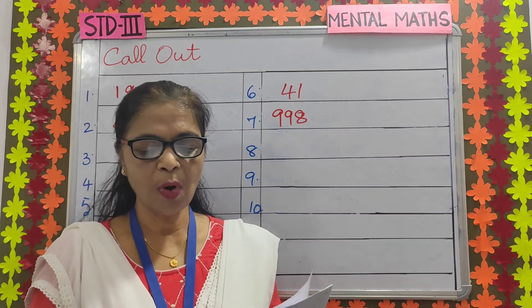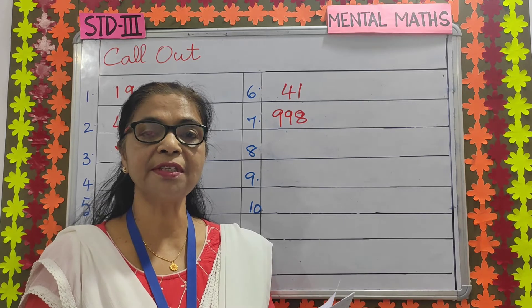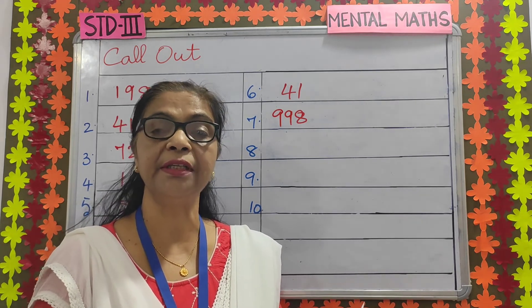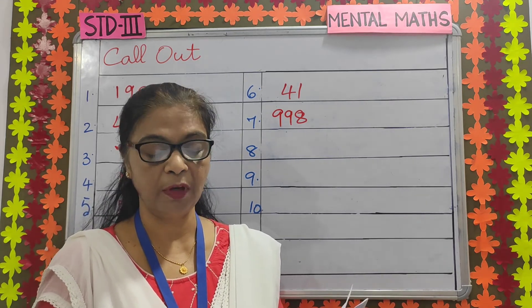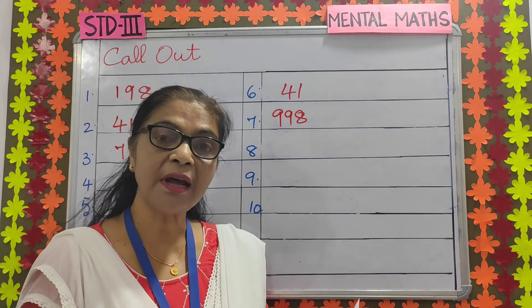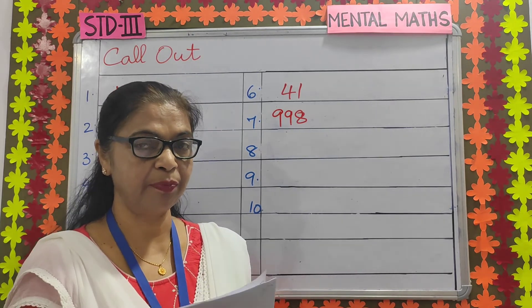Number 8: what comes just after 3,099? What comes just after 3,099? The answer is 3,100.